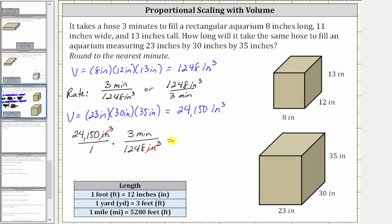So now determining the product, in the numerator we have 24,150 times three, in the denominator we have 1,248, and now the units are minutes.